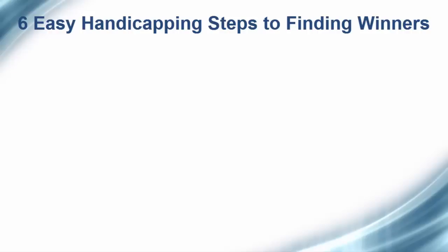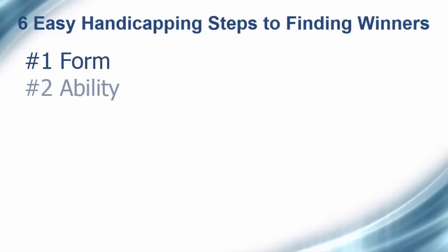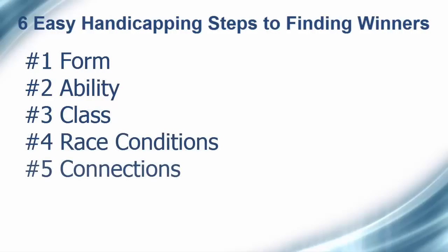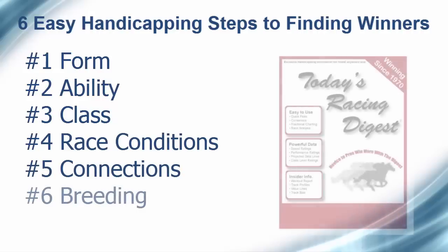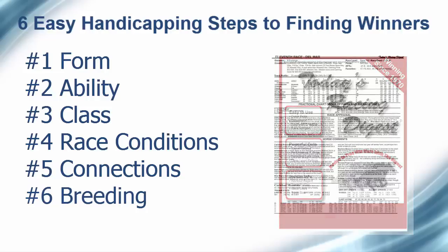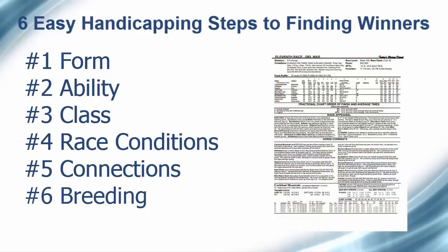They're presented in the order of importance and should be followed in that same order. The 6 steps are form, ability, class, race conditions, connections, and breeding. I'll go through the 6 steps while showing you how to use today's Racing Digest Race Sheets to handicap each of the steps.